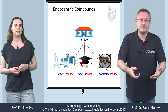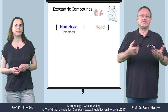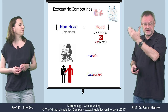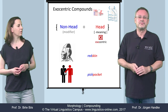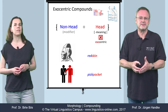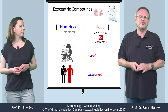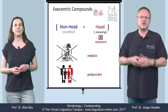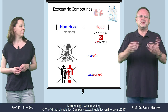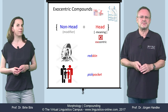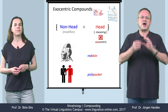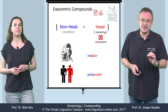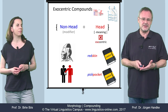In exocentric compounds, the grammatical head does not straightforwardly define its meaning. Take these two examples: 'redskin' and 'pickpocket.' In both cases, the grammatical head — that is, 'skin' and 'pocket' — does not define the meaning. A redskin is not a type of skin, and a pickpocket is not a type of pocket. In both cases, we have types of persons. So the meaning is in both cases a hyponym of some unexpressed semantic head. For this reason, exocentric compounds are normally listed in the lexicon.